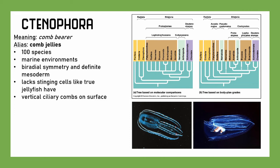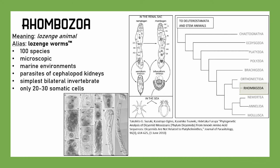Going down the list to stranger forms, we have Rhombozoa. It means 'lozenge animal' because they're kind of shaped like lozenges. They have no common name, so I'm trademarking them as lozenge worms. Some classification for this is controversial, but we'll give it phylum status for now. They're found in marine environments, and they're very particular — they are parasites of cephalopod kidneys. They are the simplest bilateral invertebrate phyla we know of, with most having only 20 to 30 somatic cells. They're probably most closely related to Orthonectida.